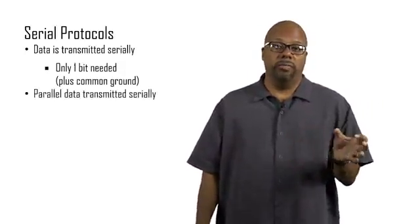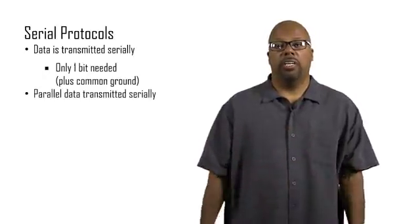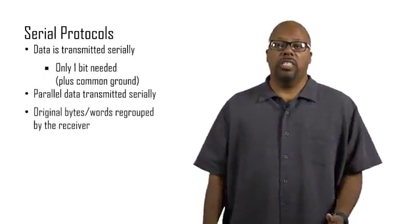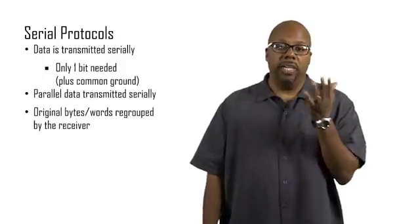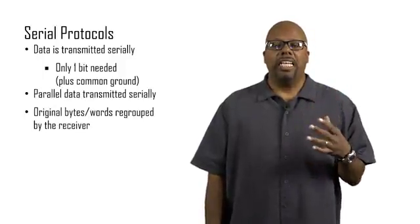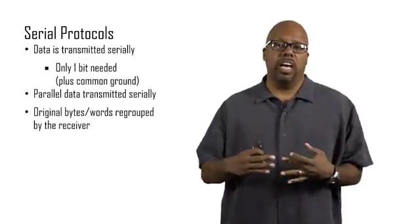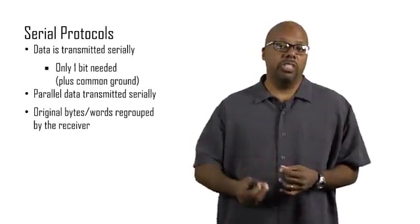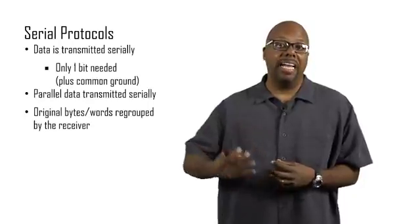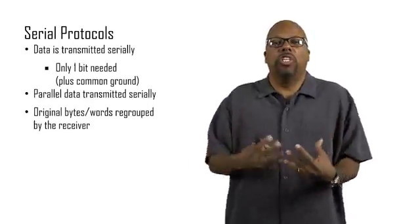So the parallel data, eight bits parallel, are going to be transmitted one bit at a time. The reason why we do this is because it saves us pins. What has to happen is these parallel bits, these eight bits, they're sent one at a time. And at the receiving end, they have to be received one at a time, but grouped back into eight bits. We need the original eight bits back.